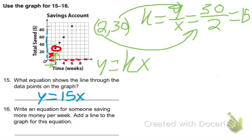Now for 16, there can be many different answers. We're writing an equation for someone saving more money per week. And then we're going to graph that line. Well according to this equation this person is saving $15 per week. So we want someone saving more than that so we could do any number more than 15.